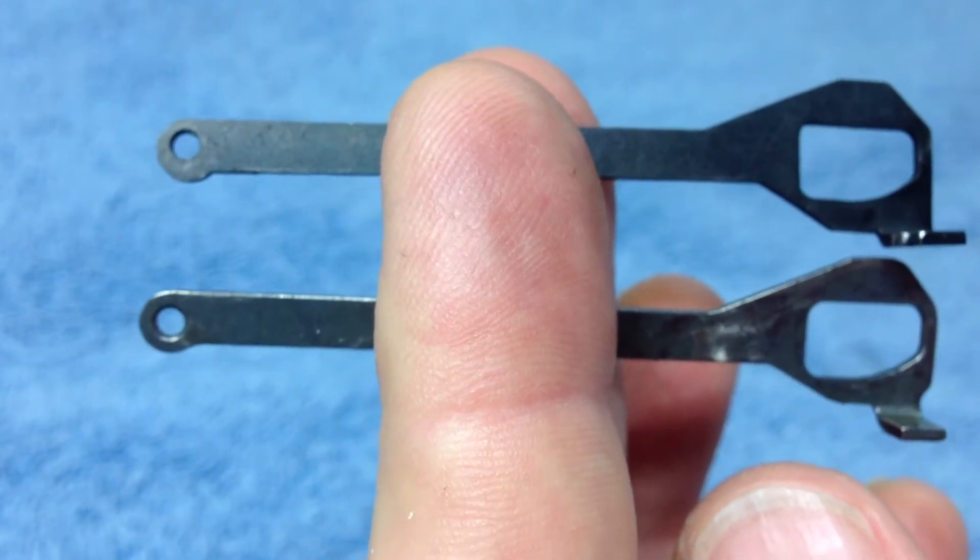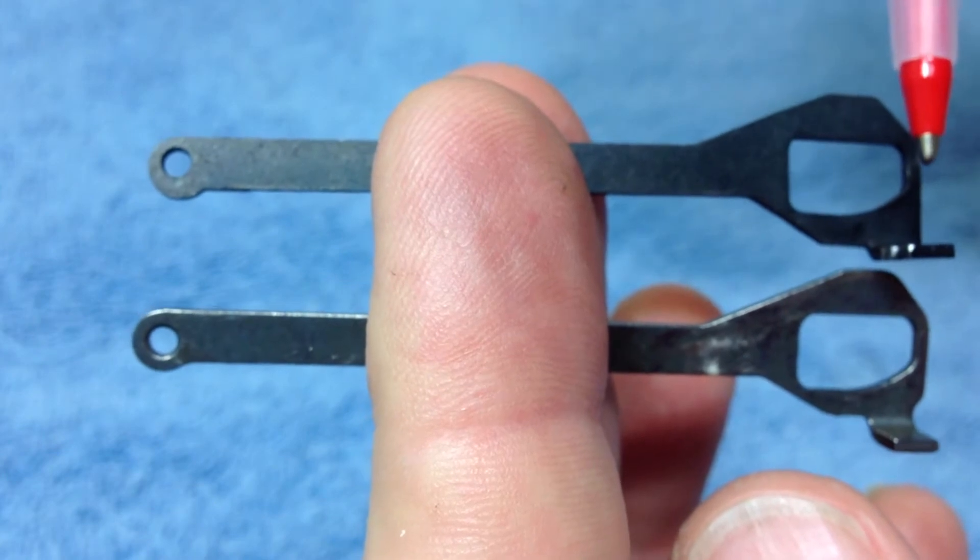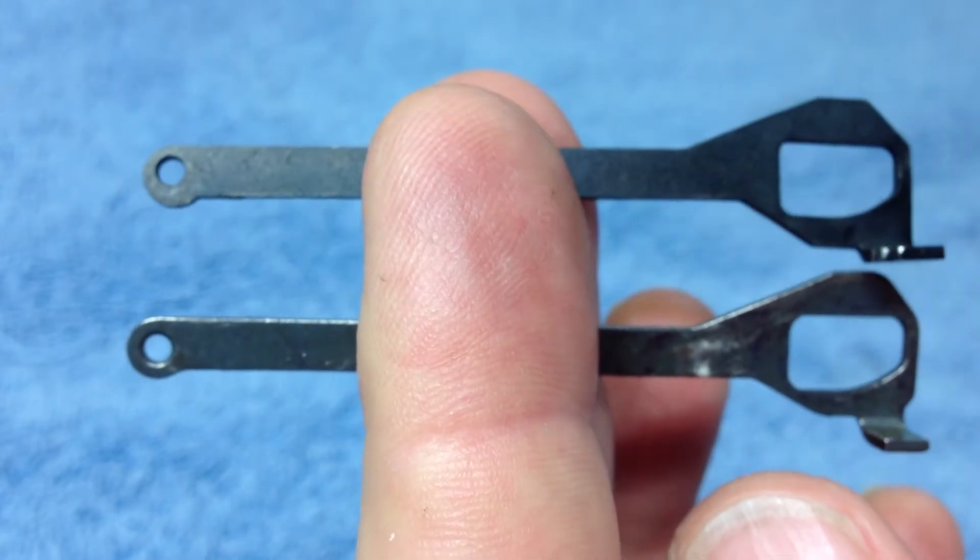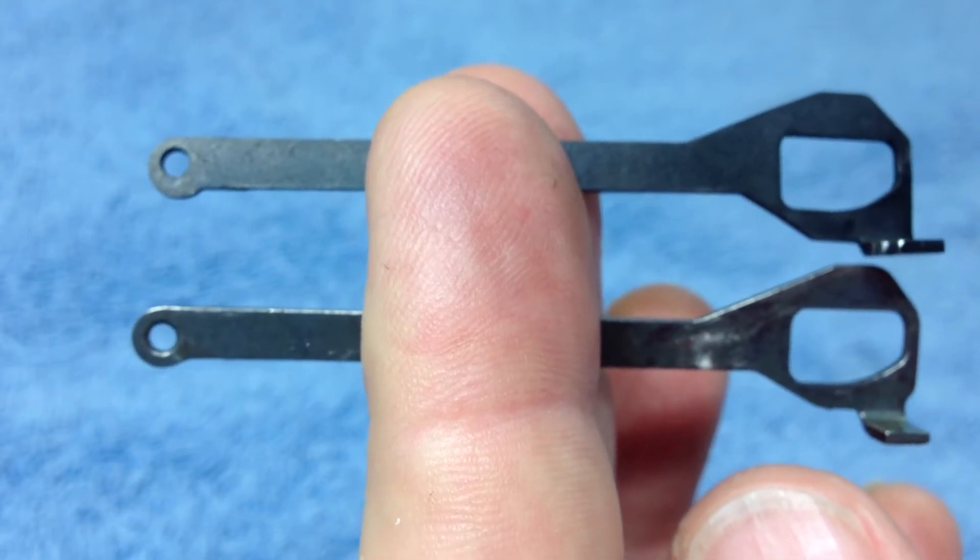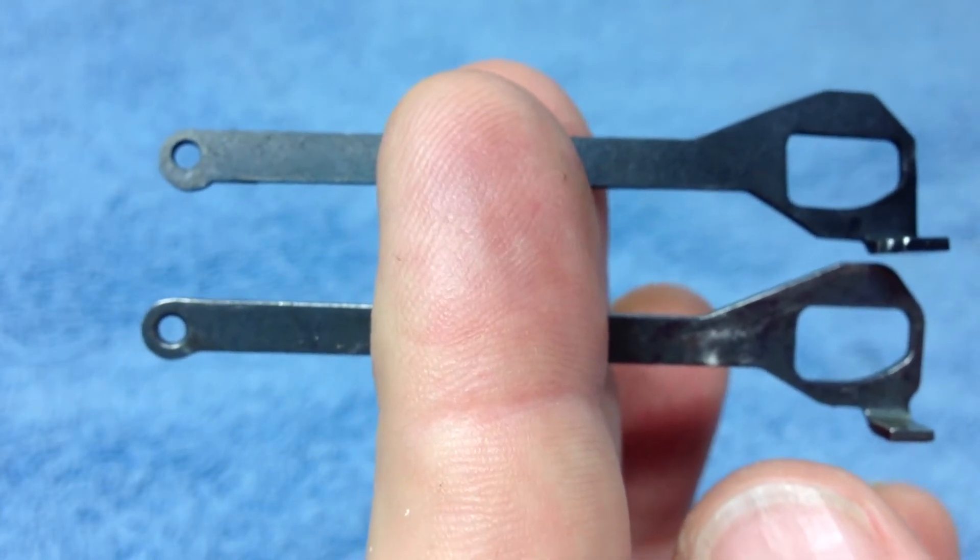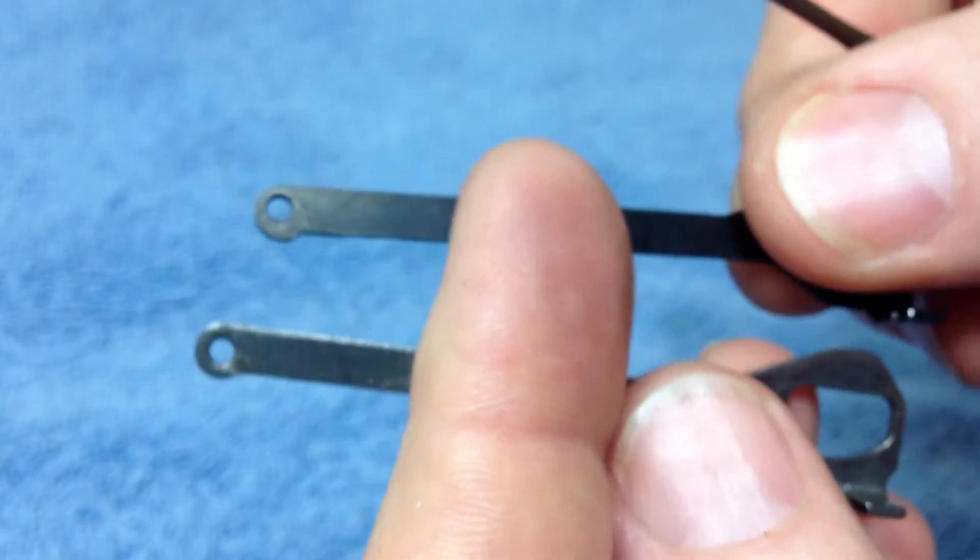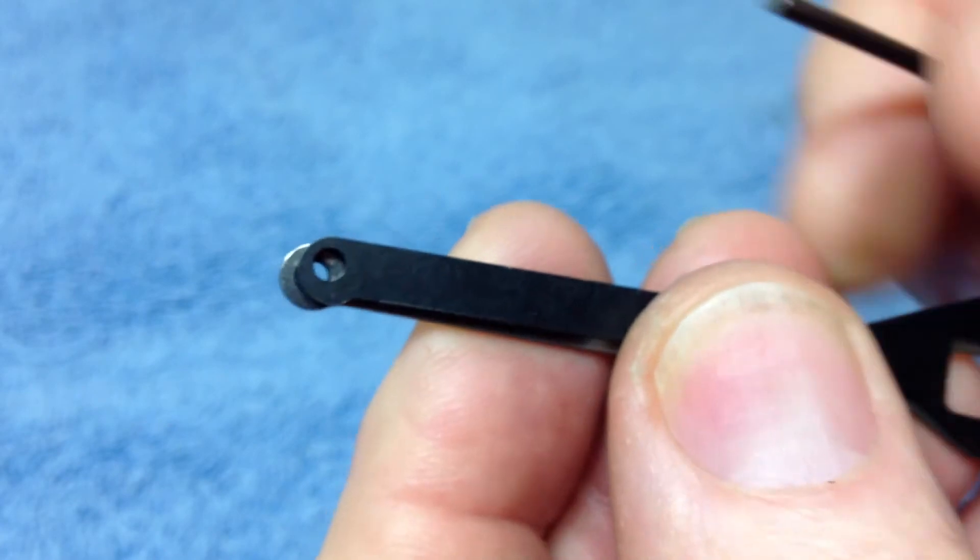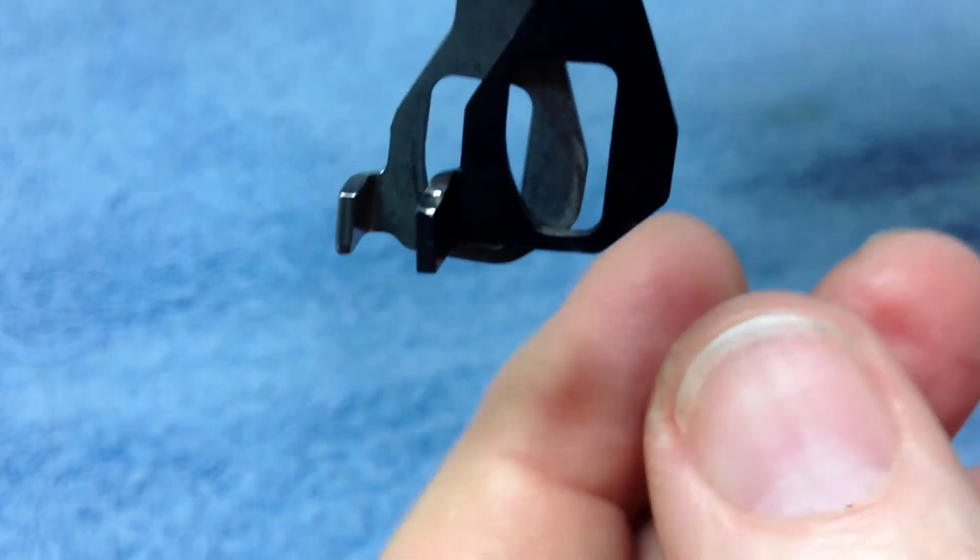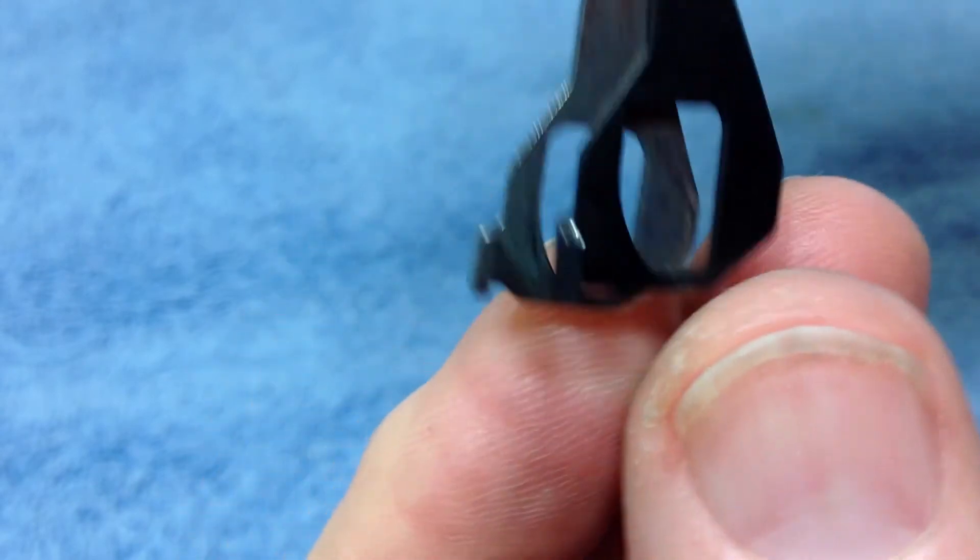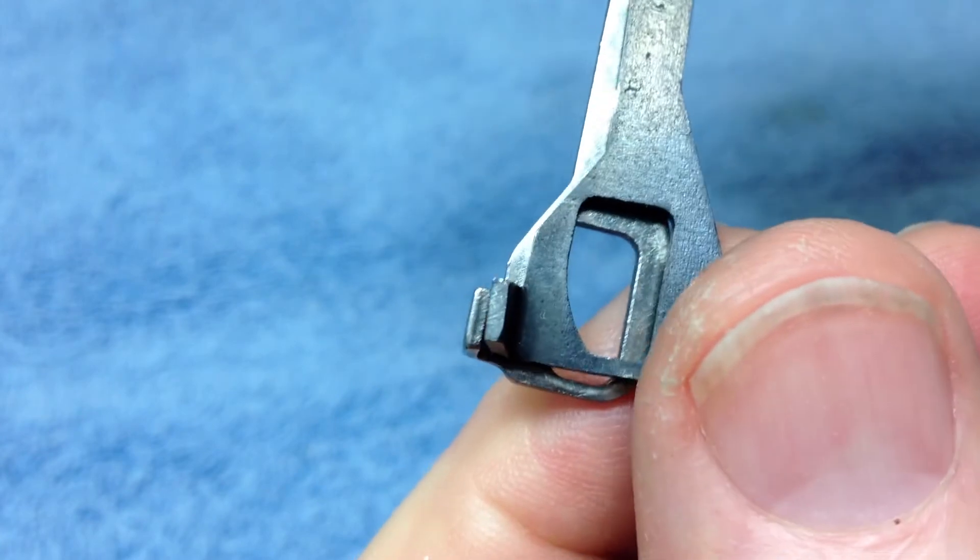The overall length, referring from the outside to the outside lengthwise, the Galloway trigger bar is shorter by a little over a sixteenth of an inch. I can show you by putting these together with a punch to hold them. You can see the Galloway is on top and it is shorter.